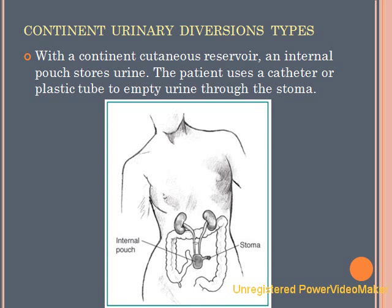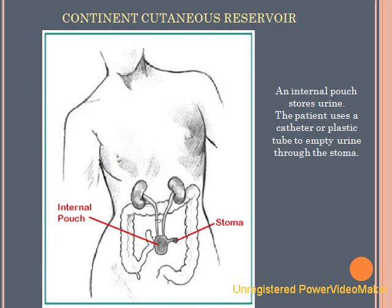In the continent method of diversion, the surgeon creates a pouch or reservoir inside the body from a section of the stomach or small or large intestine. The ureters carry urine to the pouch where it is stored. Depending on the type of continent diversion, they may or may not have a stoma. This method requires the patient to empty the reservoir — the internal pouch — regularly through a stoma using a catheter. If the urethra is preserved during the operation, the patient may be able to have a urinary diversion that does not require a stoma or a catheter.